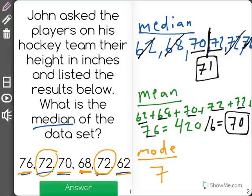So 72 shows up more than any other, that will be the mode, showing you all the different measures of center.